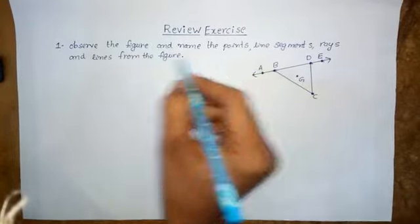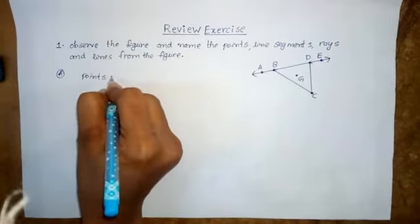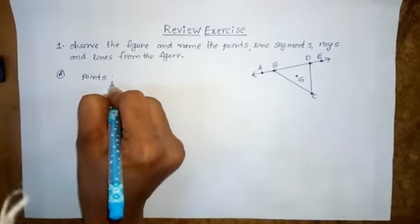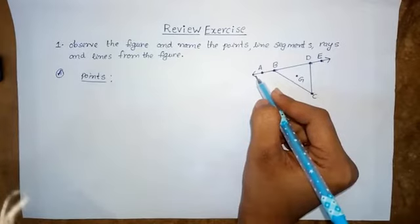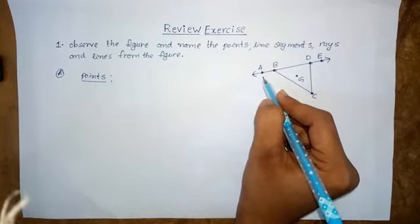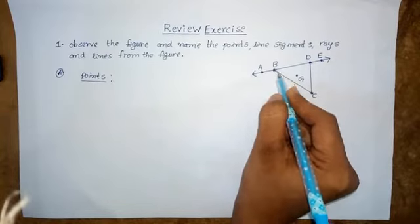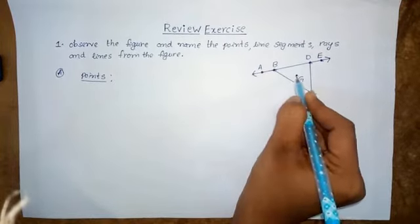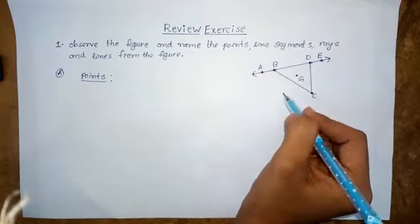First, identify the points. A point represents a mark of a position — it does not have any length, breadth or thickness, it contains only a position. So in this figure the points are A, B, C, G, D and E.